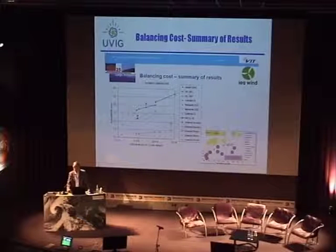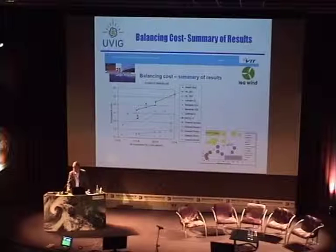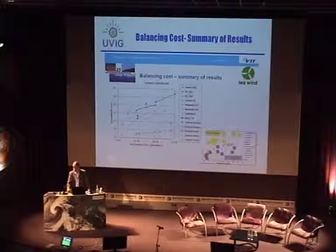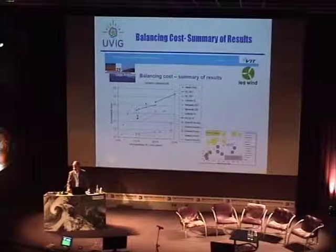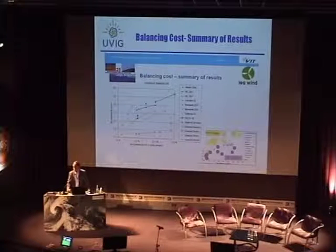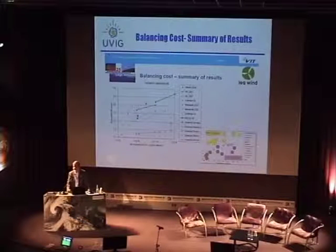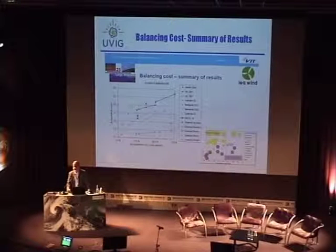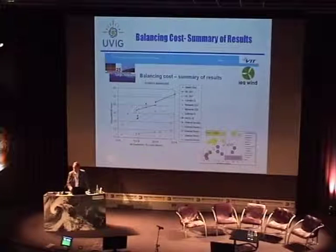There's also an interesting separation in U.S. integration costs between entities in large balancing areas or ISO markets versus non-market or very small balancing areas. ISO independent system operator markets show one to five dollars per megawatt hour, while non-market areas show five to fifteen dollars per megawatt hour. System design and operating policies play a big role.